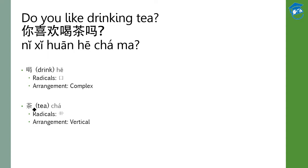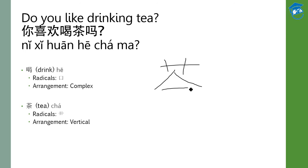The arrangement for 茶 is vertical, because you have top, middle, and bottom components. Let's look at how to write 茶. There are nine strokes for this word, 茶.